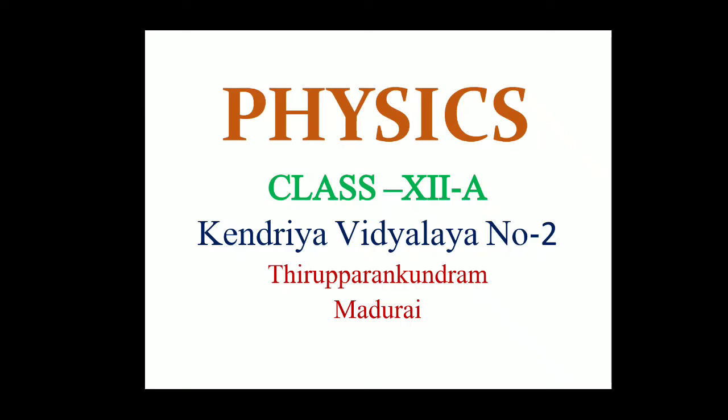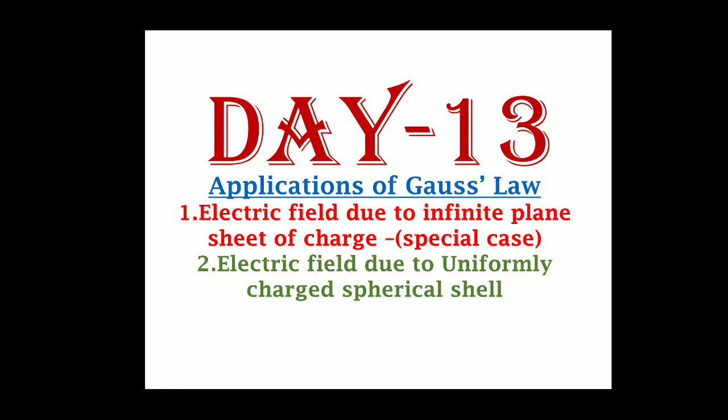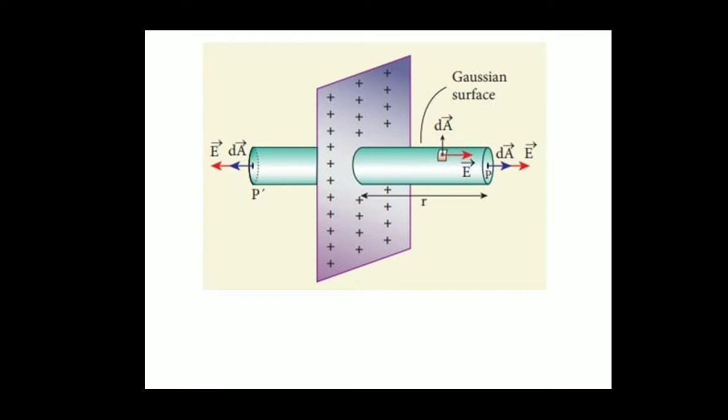Good morning students. Have you remembered last class what we studied? Last class we studied the expression for electric field due to an infinitely large plane sheet which carries a positive charge. In today's class we will study certain special cases of that and the next application: electric field due to a uniformly charged spherical shell. These two are the concepts we are going to study. Quick review of previous class.